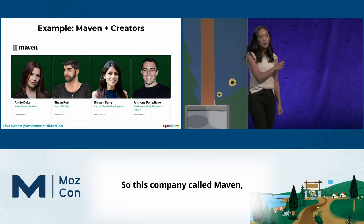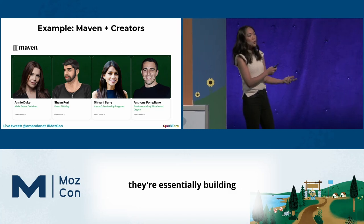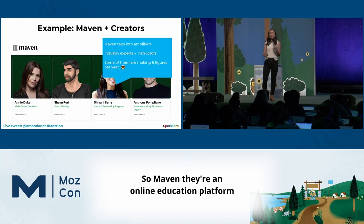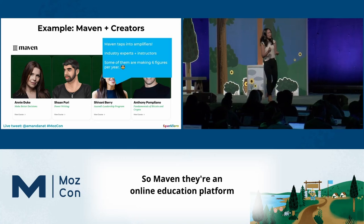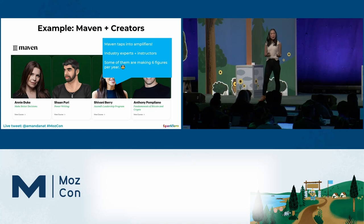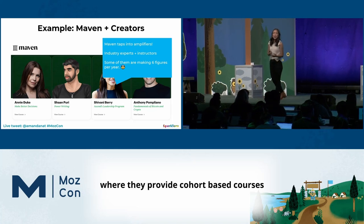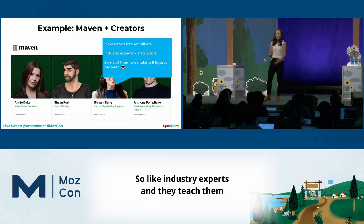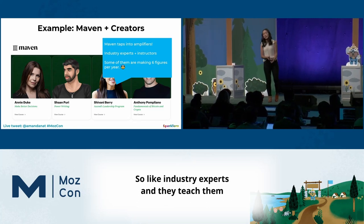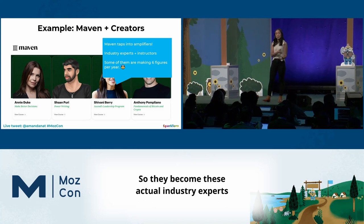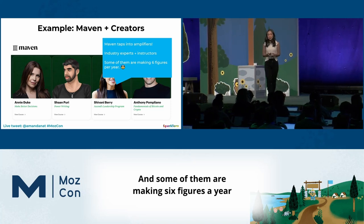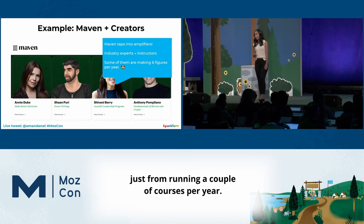Maven is essentially building their entire business on amplifiers. They're an online education platform that hosts cohort-based courses. They tap into industry experts, teach them how to create their own course, and those industry experts become course instructors — some making six figures a year just from running a couple of courses per year.